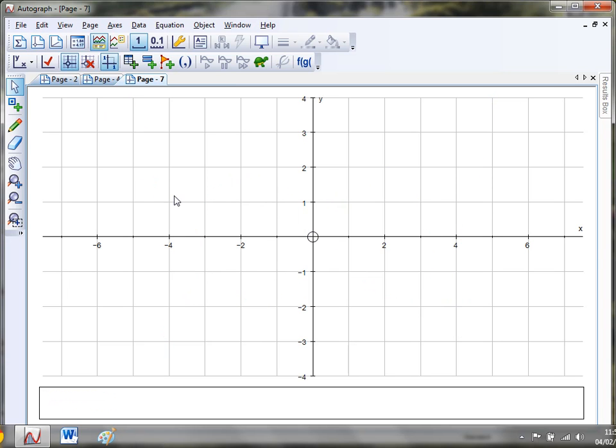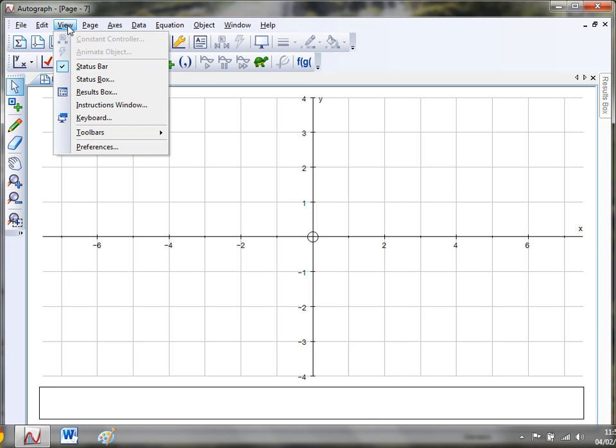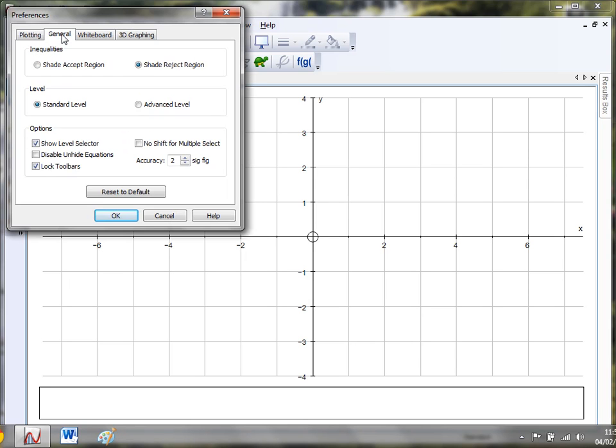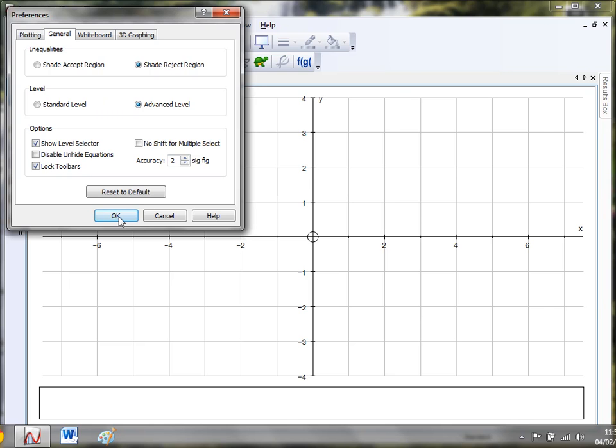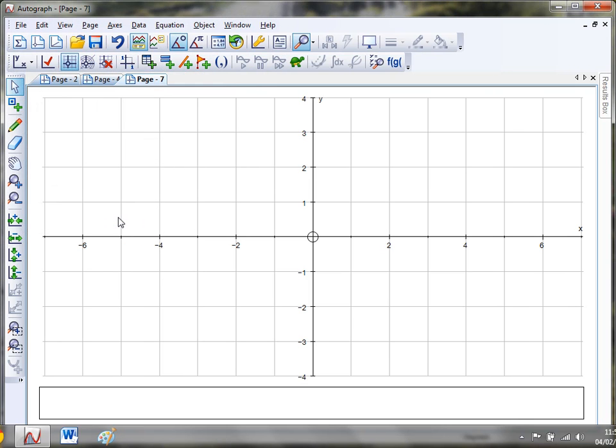What we need for this is a new 2D graph page. We're going to need to change to advanced mode. Now you can do that on setup when you initially load up Autograph, but if you ever want to change mid-program, just hover up here to View, go to Preferences, General, and switch to advanced level.